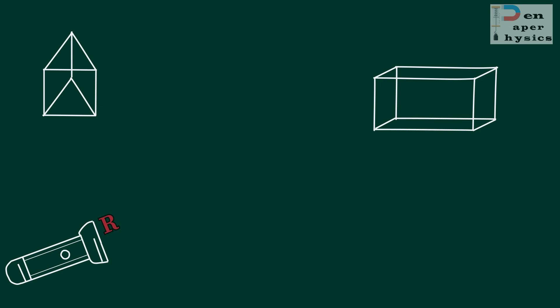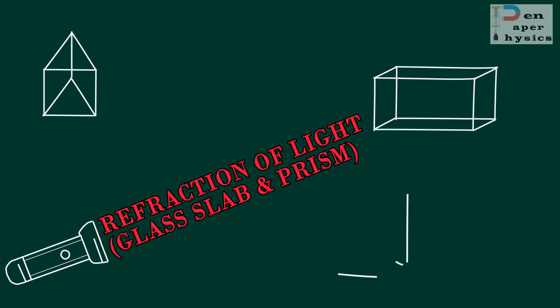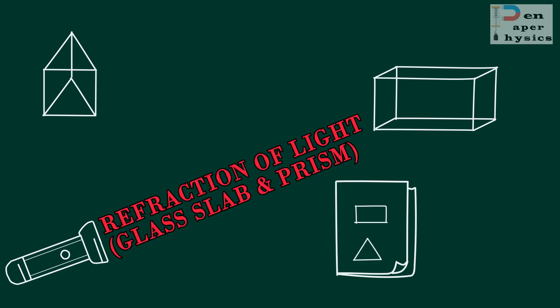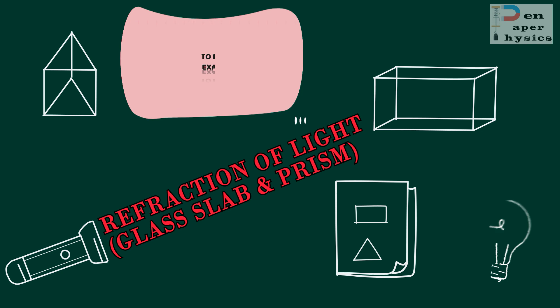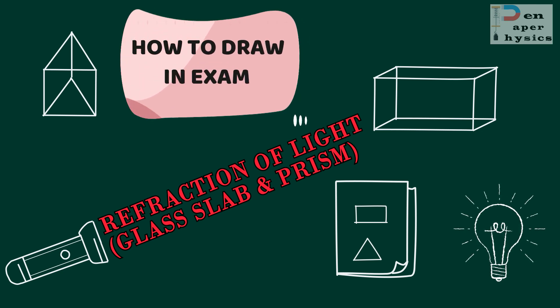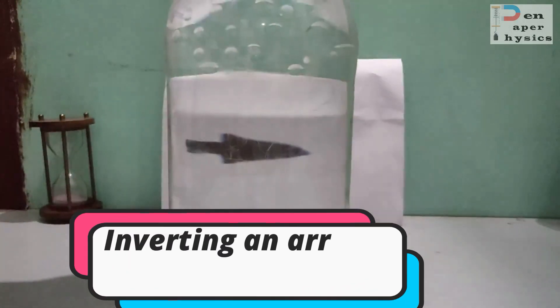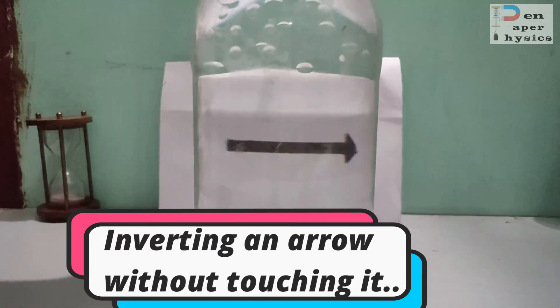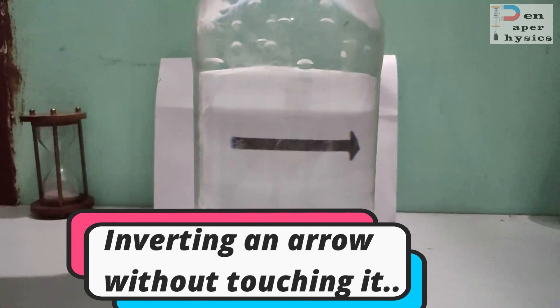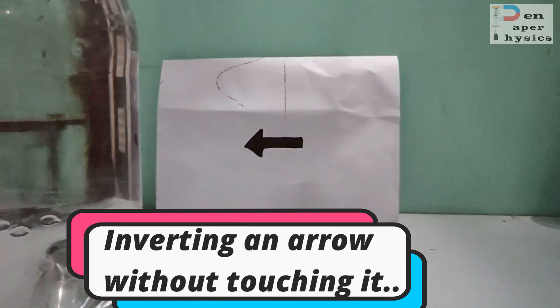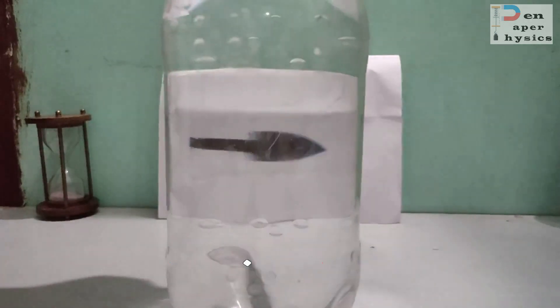So now without wasting any more time let's move into the video. Have you ever tried inverting an arrow without even touching it? As you can see I did it by using a property of light called refraction.